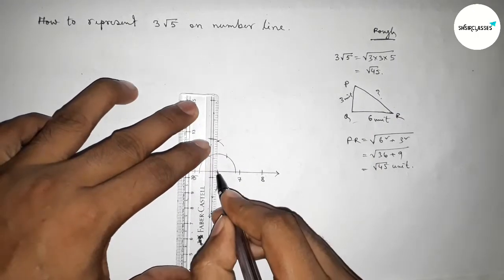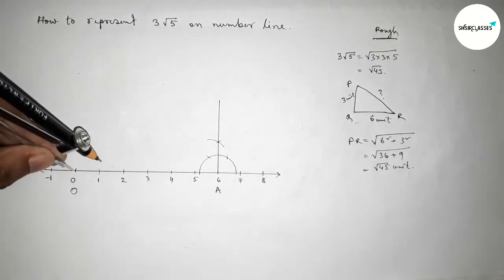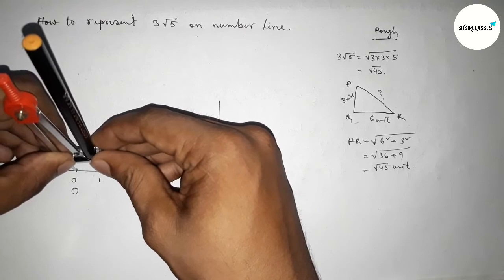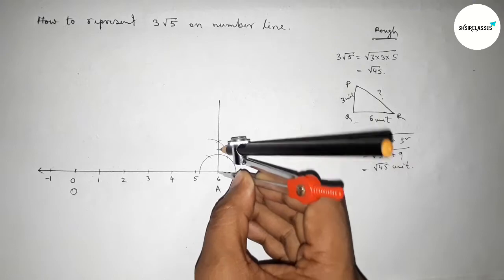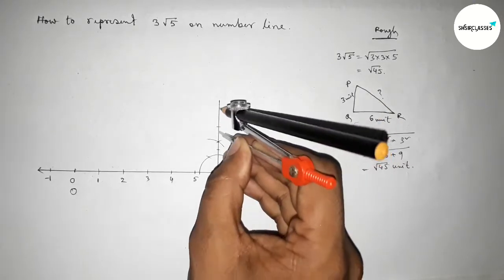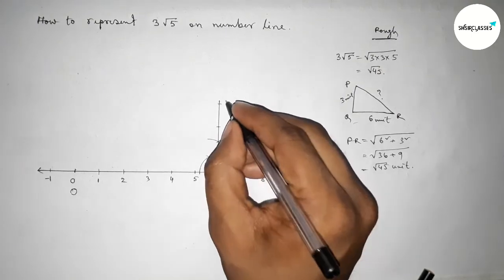Now first joining this line to get here a 90 degree. Now taking the length three units, so first taking one unit length and we have to cut the line three times.